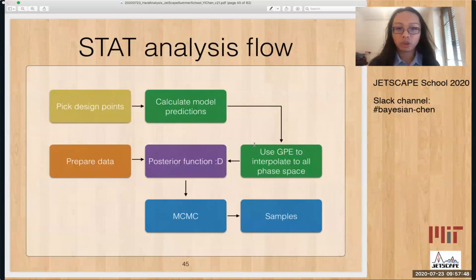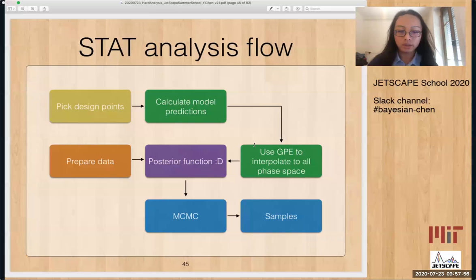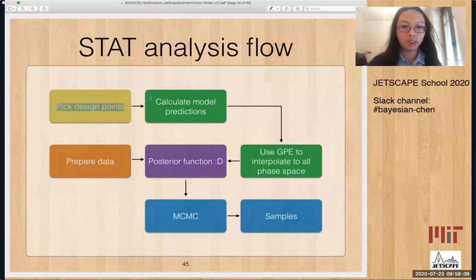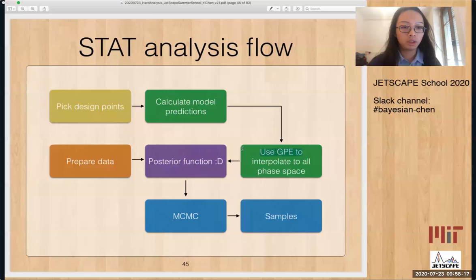The analysis workflow can be shown here. There are a lot of boxes, and it's basically the same workflow that was done yesterday by William. First, we pick the design points in the parameter space and calculate model predictions for those design points. Then we use a Gaussian process emulator to interpolate to all phase space.